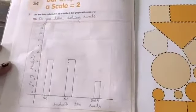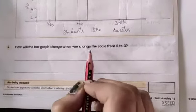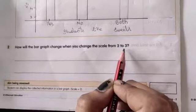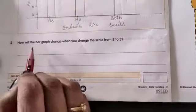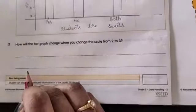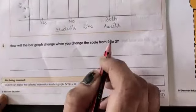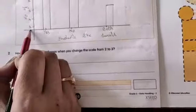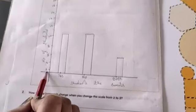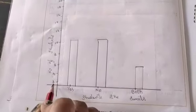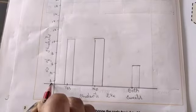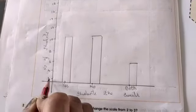So the next one, what we have - how will the bar graph change if you change the scale of 2 to 3? So how will the bar graph change? How it will change when you change the scale from 2 to 3? So what will happen in the scale? Here, this is called a scale, right?